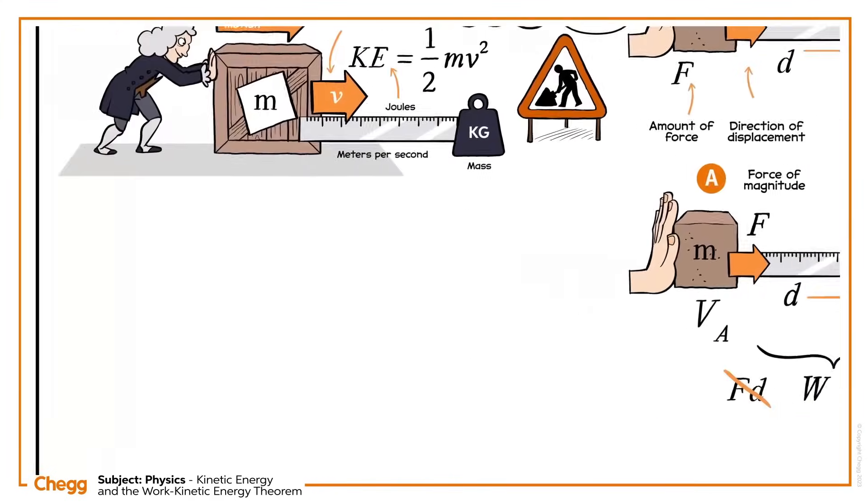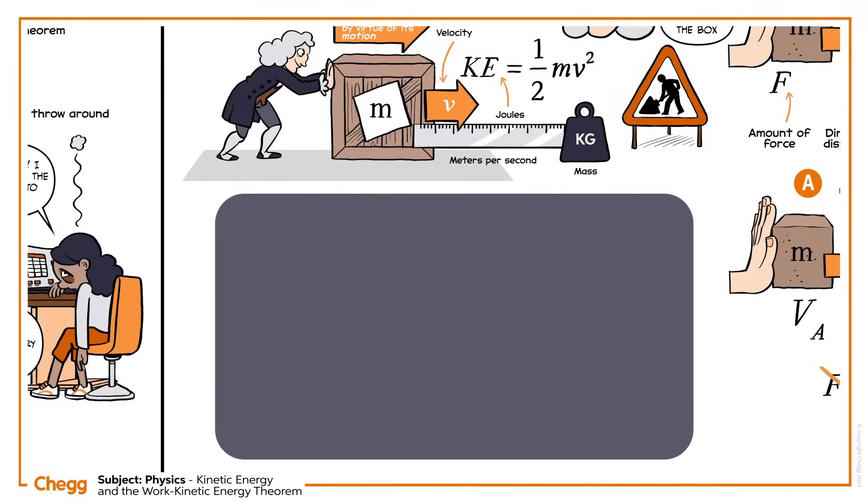Now, cast your mind back to the equations of motion. The third kinematic equation of motion tells us that final velocity squared equals initial velocity squared plus 2AD. Solve for acceleration and we get this. Now, drop this new equation for acceleration into our formula for work done, replacing the A.